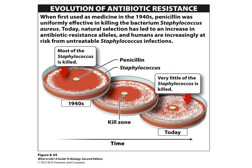In the 1940s, penicillin, an antibiotic used to kill bacteria, was introduced. In the beginning, these antibiotics, like penicillin, were highly effective at killing, especially Staphylococcus, but other bacteria as well. Over time, we see the buildup of the resistance gene, which allows more and more bacteria to survive and thrive even in the presence of antibiotics.